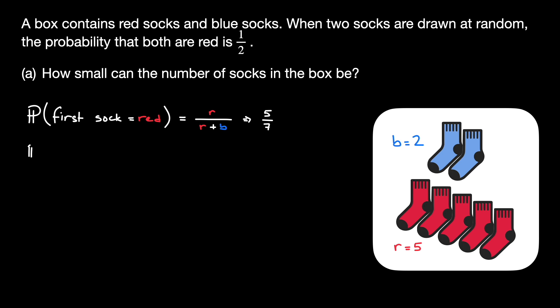Now, the probability of drawing the second sock and it being red is r minus 1 divided by r minus 1 plus b, because there is one less red sock in the box, but the number of blue socks has remained the same. Therefore, the probability that the second sock is red would be 4 divided by 6.